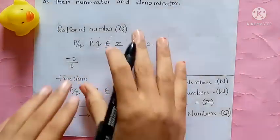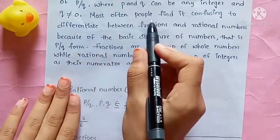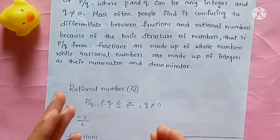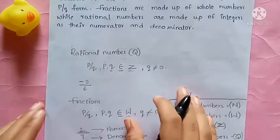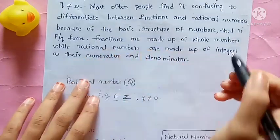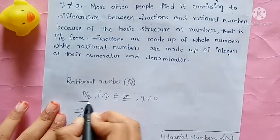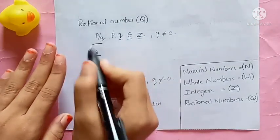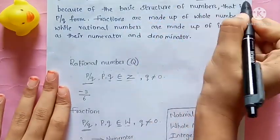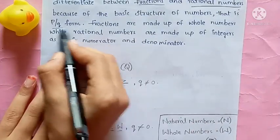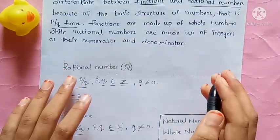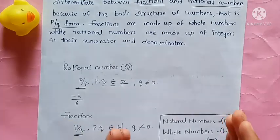Most often people find it confusing to differentiate between fractions and rational numbers because of their similar P by Q structure. The key difference is: fractions are made up of whole numbers, while rational numbers are made up of integers.